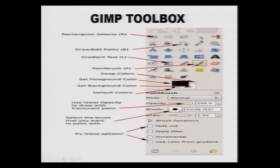It is shown currently at the mouse pointer. The next tool we are going to cover is select by color. Thirdly, in the second row, the first tool is the intelligent scissor tool. Another tool also in this category is the foreground select tool. The fifth tool we are going to cover is the color picker tool. These five tools will be covered in this session.